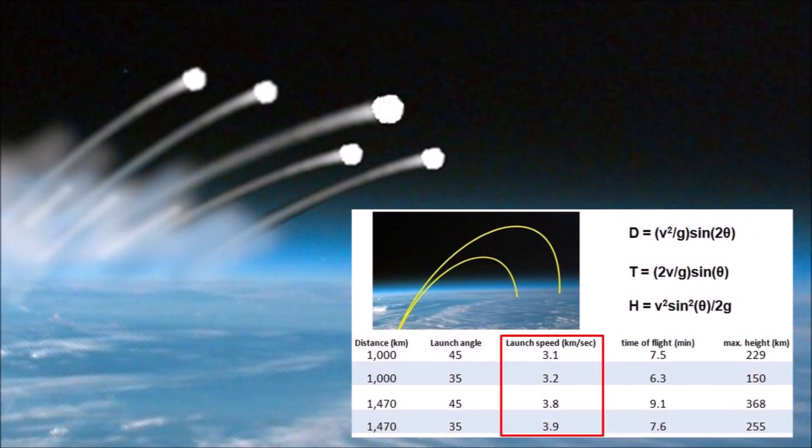Using ballistic equations to estimate the launch speeds needed for ice boulders to travel from the Great Lakes to the East Coast and Nebraska, the speeds range from 3 to 4 kilometers per second depending on launch angles — 4 to 5 times faster than material ejected by Krakatoa. At these speeds, the ejected glacier ice boulders would have reached at least 90 kilometers above the Earth's surface during the 30 seconds of excavation, where air density is so low it creates negligible drag. Once above the atmosphere, the projectiles would move unimpeded until re-entering.